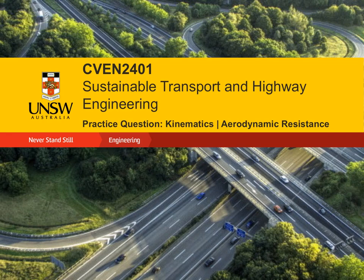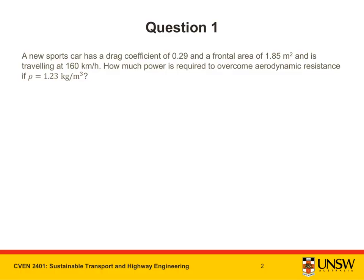This video is a practice question on kinematics and aerodynamic resistance. While I read out the question, I will underline the important points raised. A new sports car has a drag coefficient of 0.29 and a frontal area of 1.85 m² and is travelling at 160 km per hour. How much power is required to overcome aerodynamic resistance if rho is equal to 1.23 kg/m³?